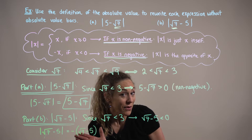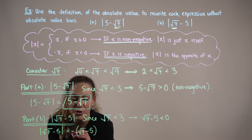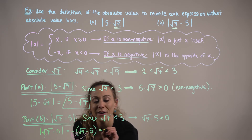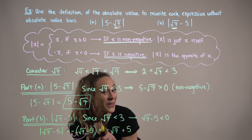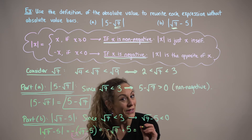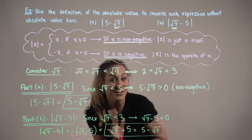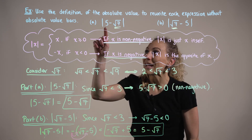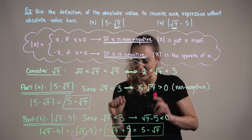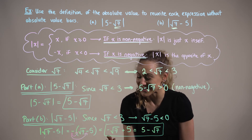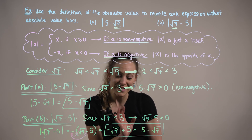There's nothing wrong with leaving the answer as is, but if you'd like, we can distribute the negative sign through to both terms and rewrite this as negative the square root of 7 plus 5, or equivalently 5 minus the square root of 7. Observe that while part A and part B have different arguments inside the absolute value, we ended up with the same answer. We'll explore this in more detail shortly, thinking about the distance between two points.